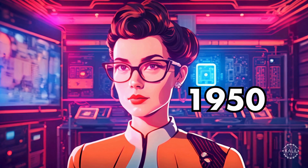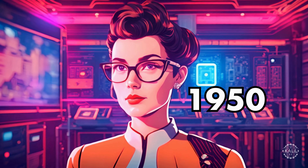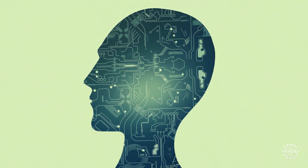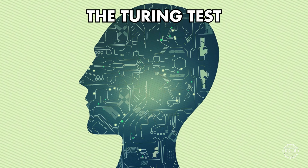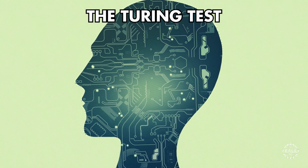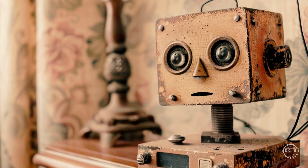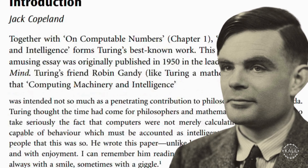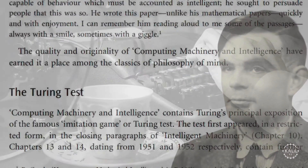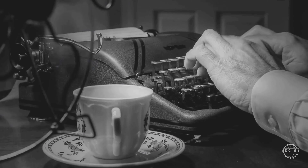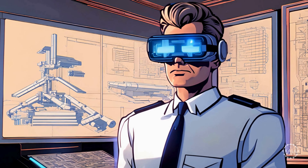In 1950, Alan Turing publishes Computing Machinery and Intelligence. It introduces what's now known as the Turing Test for determining whether a machine can behave intelligently. Though primarily focused on AI, Turing's paper provides the theoretical and computational foundations necessary to build smart, data-driven virtual models of physical assets.